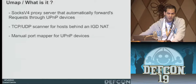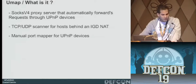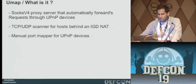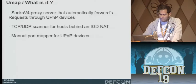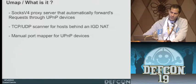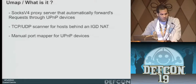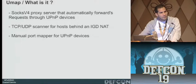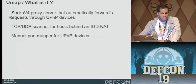UMAP — the tool. First of all, it's a SOCKS proxy server that forwards or pipes requests through UPnP devices. It's also a TCP/UDP scanner for hosts behind the IGD NAT — basically we can scan services of the host inside the NAT from outside. And also a manual port mapper for UPnP devices.